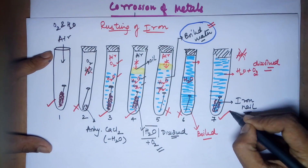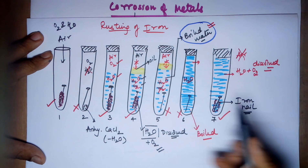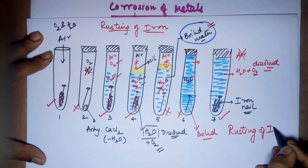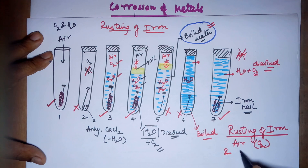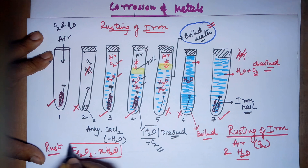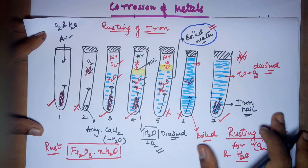Out of the seven test tubes, rusting happened in test tubes one, three, four, and seven. The conditions required for rusting of iron are clear: you require air — which provides oxygen gas — as well as moisture, which is water. In the presence of these two only, you get the formation of rust, and the formula for rust is hydrated ferric oxide, Fe₂O₃·xH₂O, where x is a variable number of water molecules.